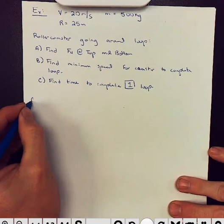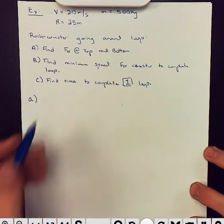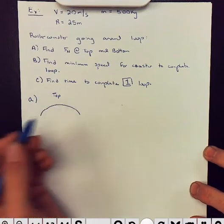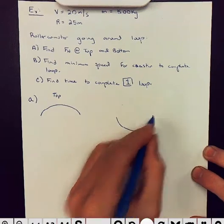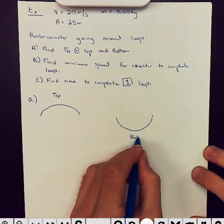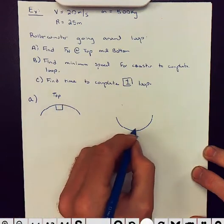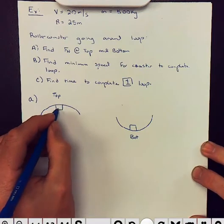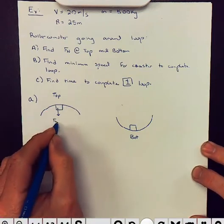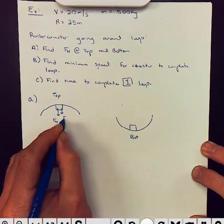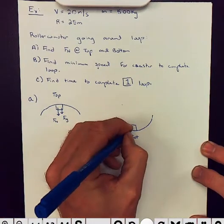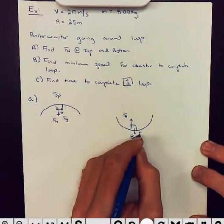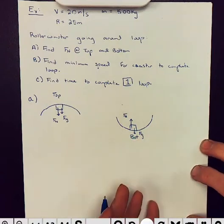So for part A, first of all, draw a picture. So draw one picture at the top and one picture at the bottom. Here's the object at the top and here's the object at the bottom. Now, the forces acting at the top are normal and gravity. Forces acting at the bottom are normal and gravity. The difference is one is up, one is down.